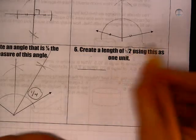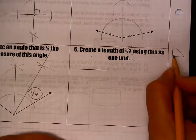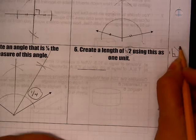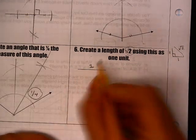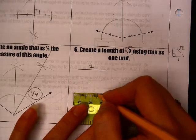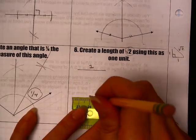All right, I want to do a length of root 2, and the length of root 2 shows up on a 45-45 right triangle where it's 1-1-root 2. And since this is my value of 1, I need to create a right triangle that has that as its length.